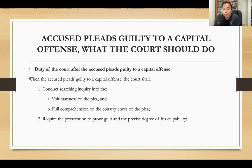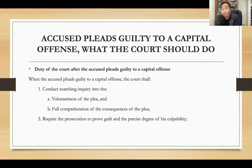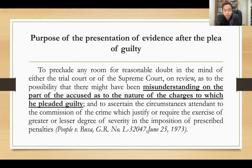If the accused pleads guilty to a capital offense, the duties of the court are: first, the court must ascertain the voluntariness of the plea, because sometimes the accused may be under pressure, harassment, violence, intimidation, or torture. The court is under obligation to conduct searching inquiries as to the voluntariness of the plea and whether the accused fully understood the consequences of his plea of guilty. The court must also require the prosecution to prove the guilt and the precise degree of culpability of the accused.